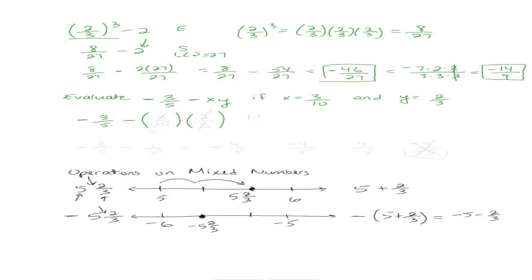So instead of x and y, I'm just going to put parentheses in there. This is going to be helpful if you have negative numbers that you're plugging in. And then where the x was, I'm just going to plug in 3 tenths. And where the y was, I'm going to plug in 2 thirds.